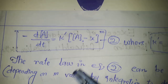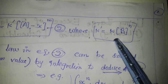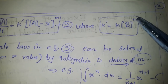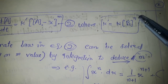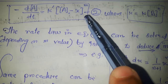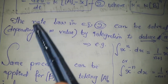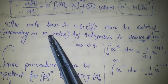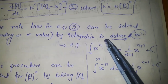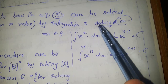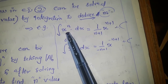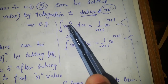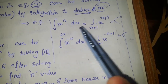K prime is the product of k and [B]^n, and it is constant since B is taken in large excess. The rate law shown in equation 2 can be solved using our previous integration equations for different orders of reaction depending on the value of M. For example, for a general power n, we use the integration formula 1/(n+1) · x^(n+1), or for x^(-n) we use the corresponding formula.